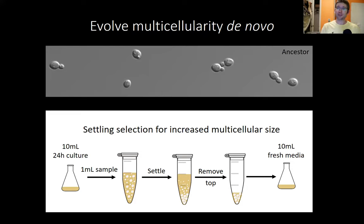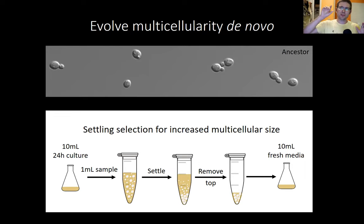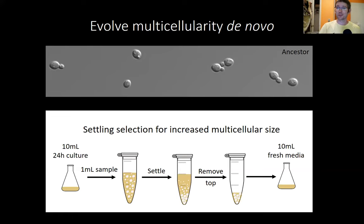Our approach has been to evolve multicellularity from scratch. Our primary model system is Baker's yeast, a single-celled fungus, and we do the simplest experiment in the world — following Rich Lenski's long-term evolution experiment. We grow yeast exponentially for 24 hours, then use settling selection to select for groups: bigger groups sink faster than smaller groups. We take the surviving big groups, passage them back to fresh media, and rinse and repeat. Size is an important trait under selection in virtually every lineage that becomes multicellular.